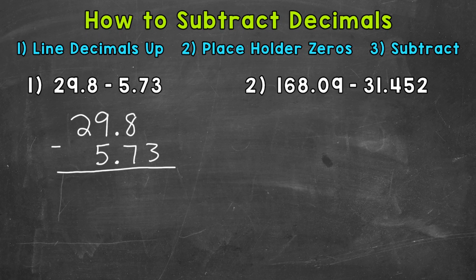We can use placeholder zeros to make this problem look a little more lined up, meaning we can place a zero in the hundredths place right here. We're using placeholder zeros to better align the problem. Remember, zeros to the right of a decimal do not change the value. That's an equivalent decimal, so we're not changing the value of that number or the problem overall. Now we're ready to subtract.